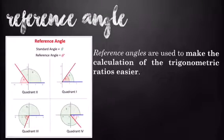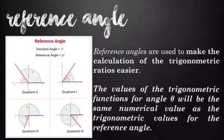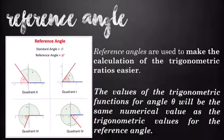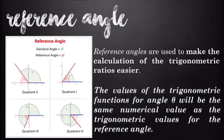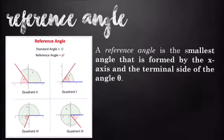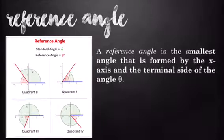Reference angles are used to make the calculation of the trigonometric ratios easier. The values of the trigonometric functions for angle theta will be the same numerical value as the trigonometric values for the reference angle. A reference angle is the smallest angle that is formed by the x-axis and the terminal side of the angle theta.